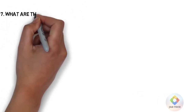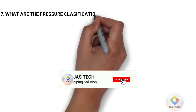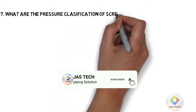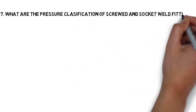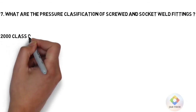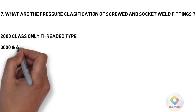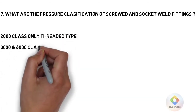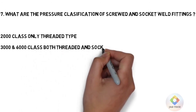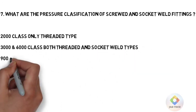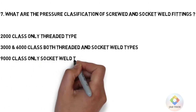Q7: What are the pressure classifications of screwed and socket weld fittings? 2000 class: threaded type only. 3000 and 6000 class: both threaded and socket weld types. 9000 class: socket weld type only.